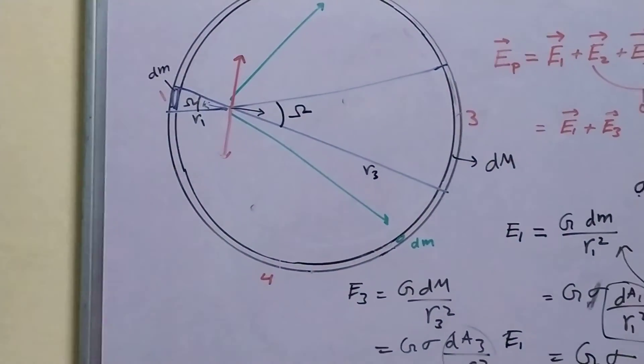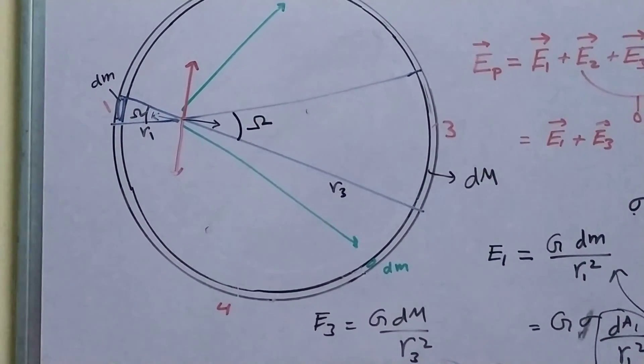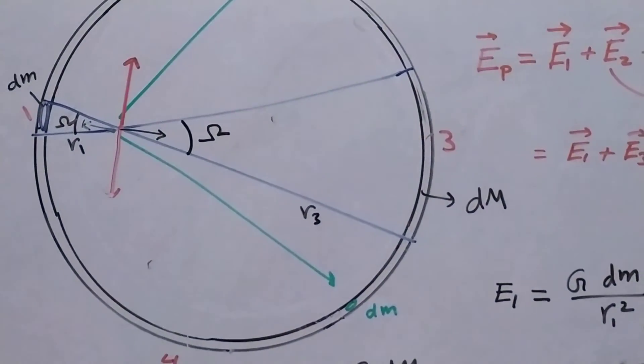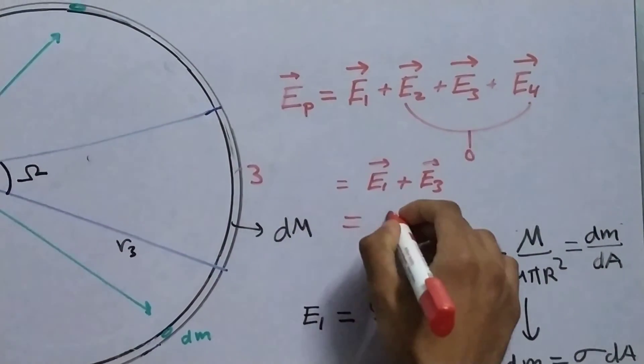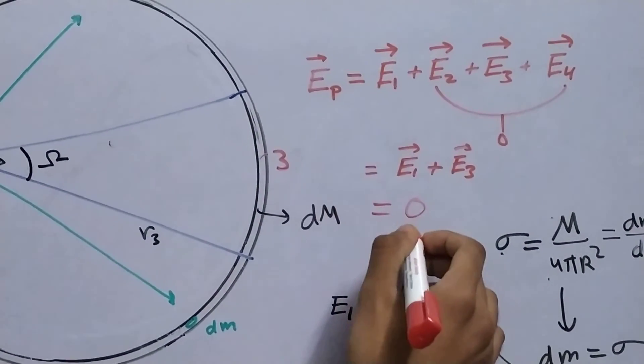And since they have the same magnitudes, they are in the opposite direction, these two will also cancel out, which leaves us with nothing.